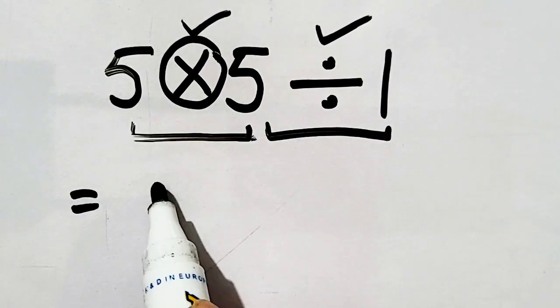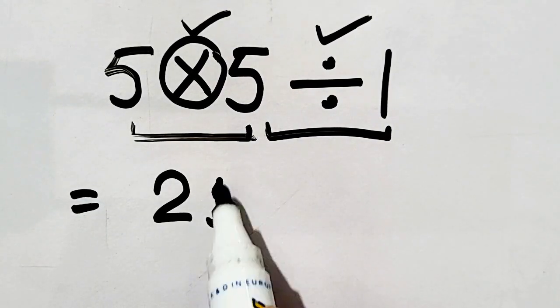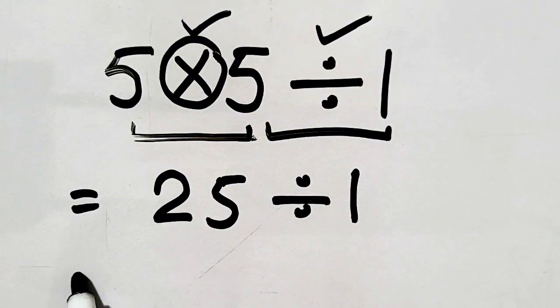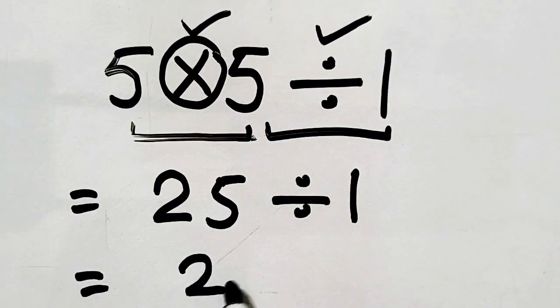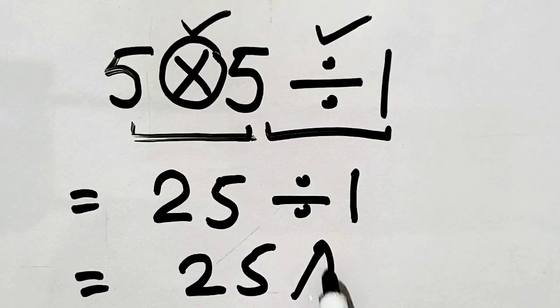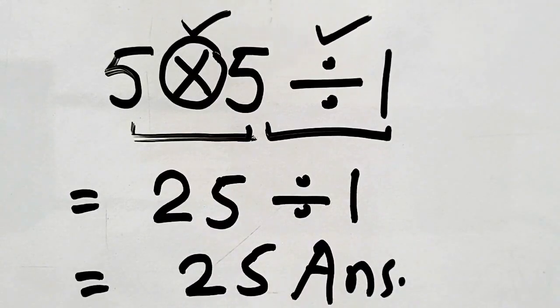So 5 times 5 equals 25 divided by 1. 25 divided by 1 equals 25. So the answer will be 25. Thank you.